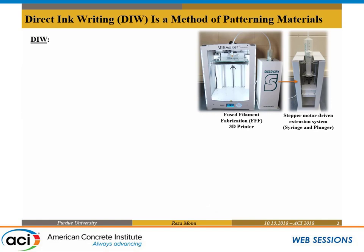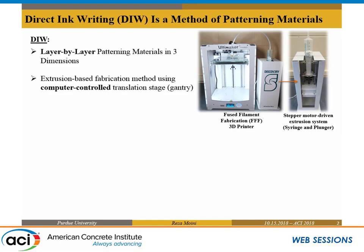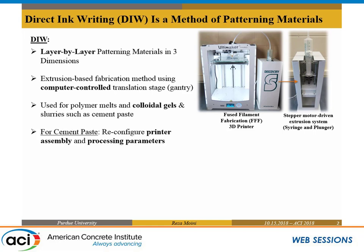What we call direct ink writing is essentially a layer-by-layer method of fabrication and patterning of materials in three dimensions. It is an extrusion-based fabrication technique via a controlled computer stage or so-called gantry, as opposed to other types such as slipcasting. It's a printing platform — a printing technique — as opposed to the overall umbrella of additive manufacturing. It's good for additive manufacturing of colloidal gels, polymer melts, and cement paste, which is a colloidal gel. This is a desktop printer we use as a prototyping tool.